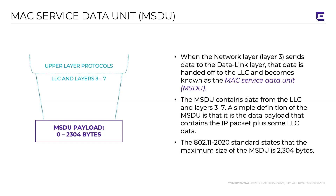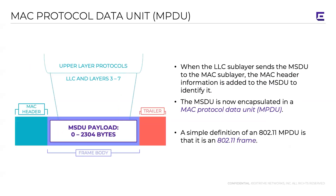When the MSDU is sent down to the MAC sub-layer, you put on a MAC header and a trailer, and now it becomes what's called a MAC protocol data unit. That is a fancy technical term for, in this case, an 802.11 frame.